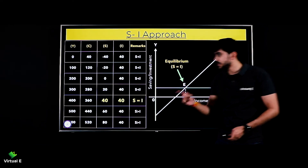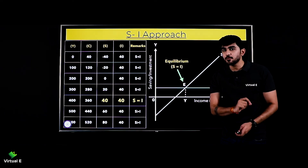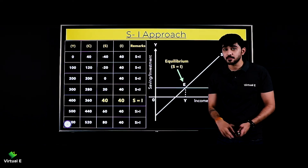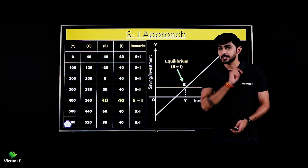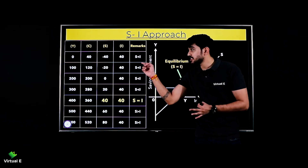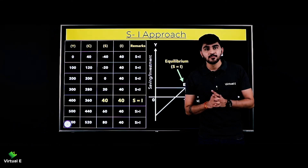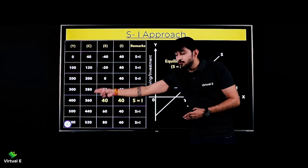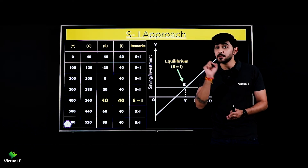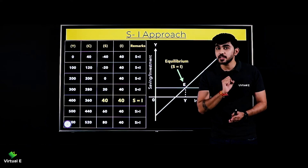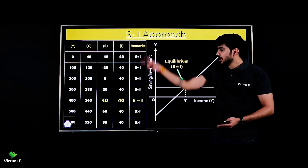That means when our income is 400, at that particular point of time we are at equilibrium, because your S is equal to your I. AD=AS approach mein bhi humne same example liya tha, wahan pe bhi humara equilibrium 400 level of income pe aaya tha. Similarly yahan S and I approach mein bhi humara equilibrium point aaya when your income is again 400.